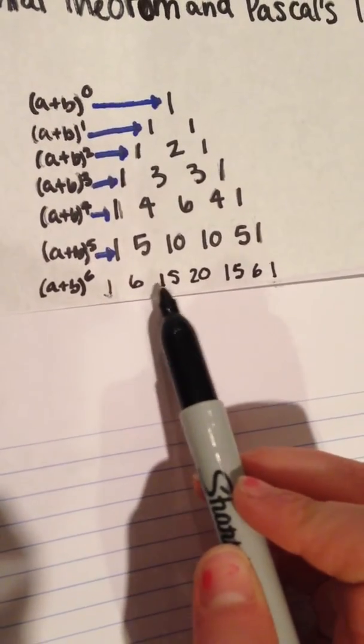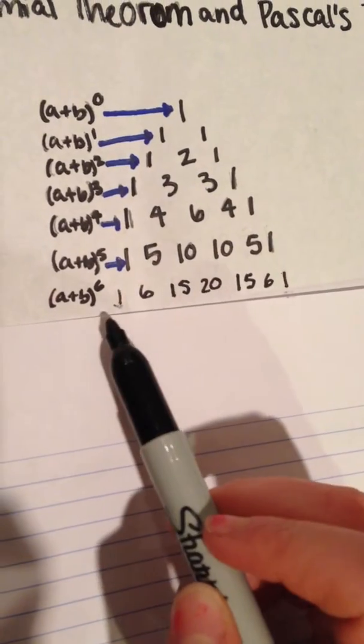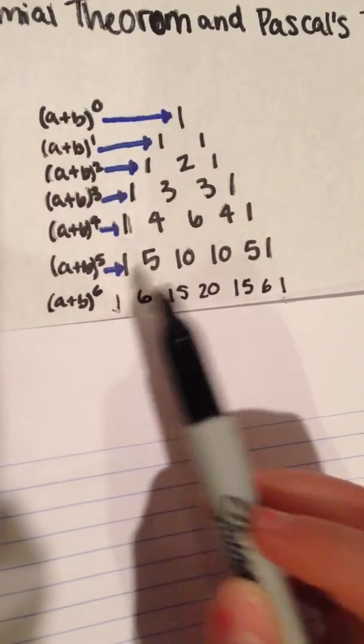You'll end up with one, six, fifteen, twenty, fifteen, six, and one if you have a binomial that you want to raise to the sixth power.